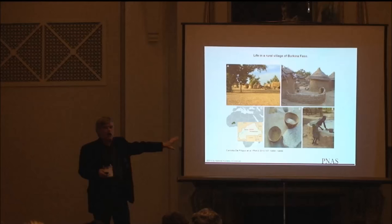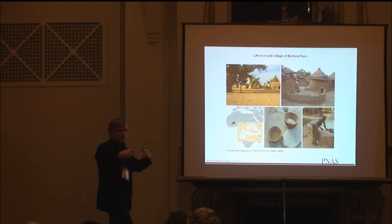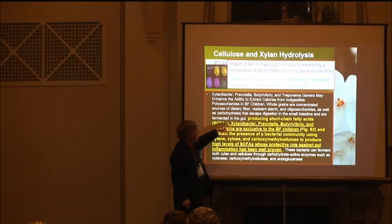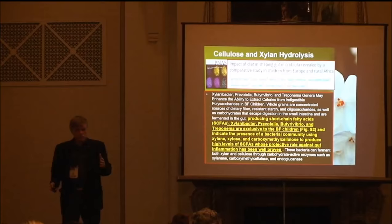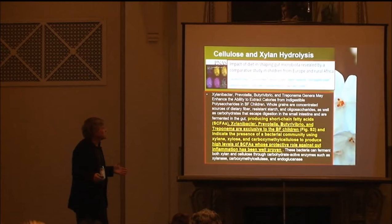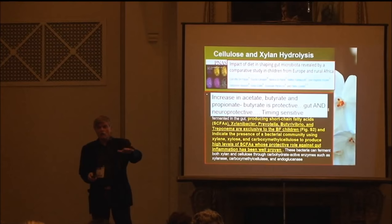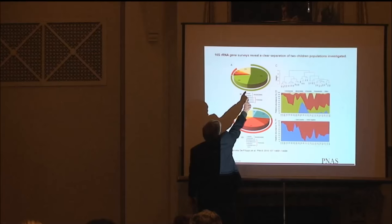These rural populations have no opposite of good hygiene, but they survive. Studies comparing autism rates in rural Africa versus urban Africa show a huge difference — because the bacteria that are missing in urban society are protective. They have a big increase in short-chain fatty acids coming from Xylenobacter, Prevotella, Butyrivibrio, and Treponema. There are protective effects especially from butyrate produced by these bacteria. Butyrate is protective for the gut and is neuroprotective — I'll show you research on the importance of butyrate in protecting the brain.